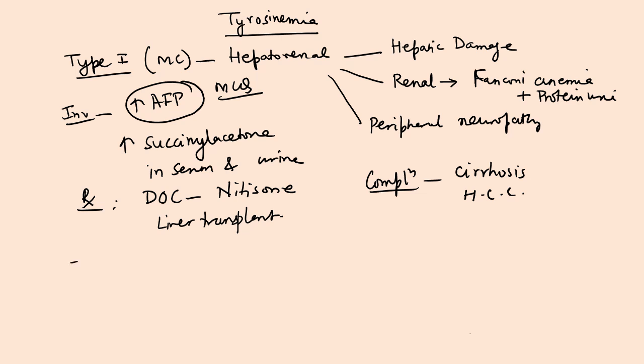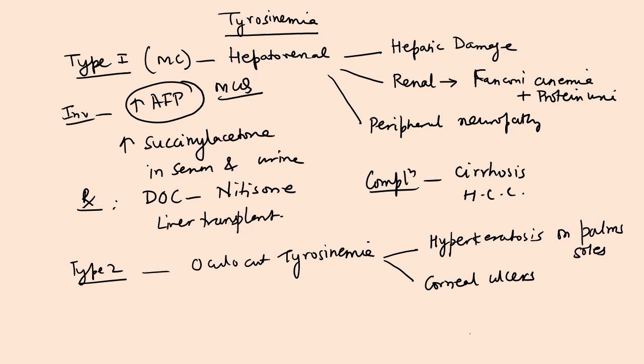Then we have the two other forms. Type 2, also known as oculocutaneous tyrosinemia. Obviously the name itself is suggestive. Eye and skin will be involved. These children have hyperkeratosis in the skin. There will be rough dry plaques, hyperkeratotic plaques on the palms and soles. Along with that, these children will also have ocular feature in the form of corneal ulcers. Mild mental retardation is also seen. It is a slowly progressive rare disease.